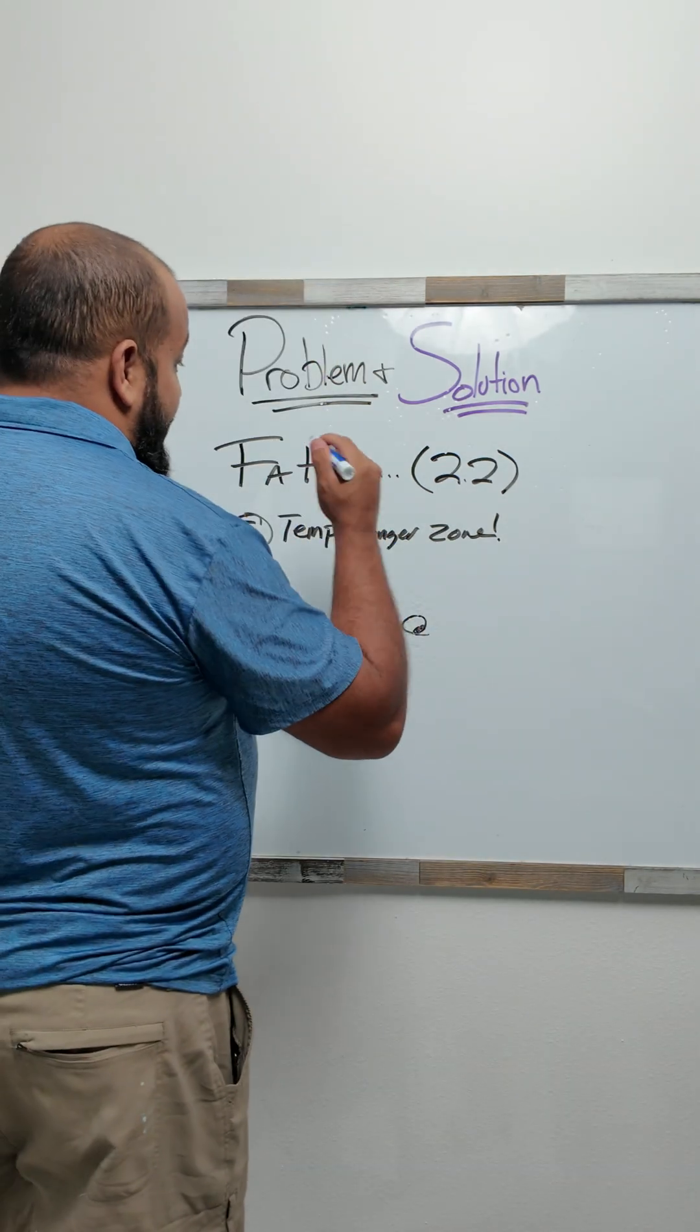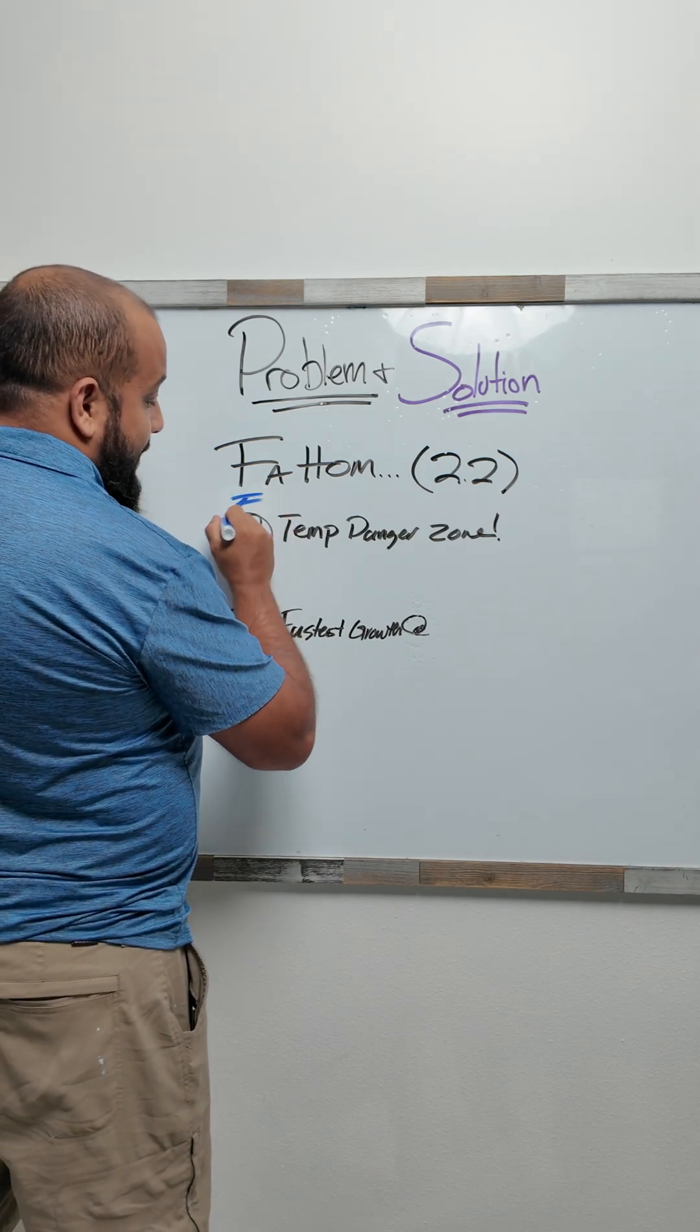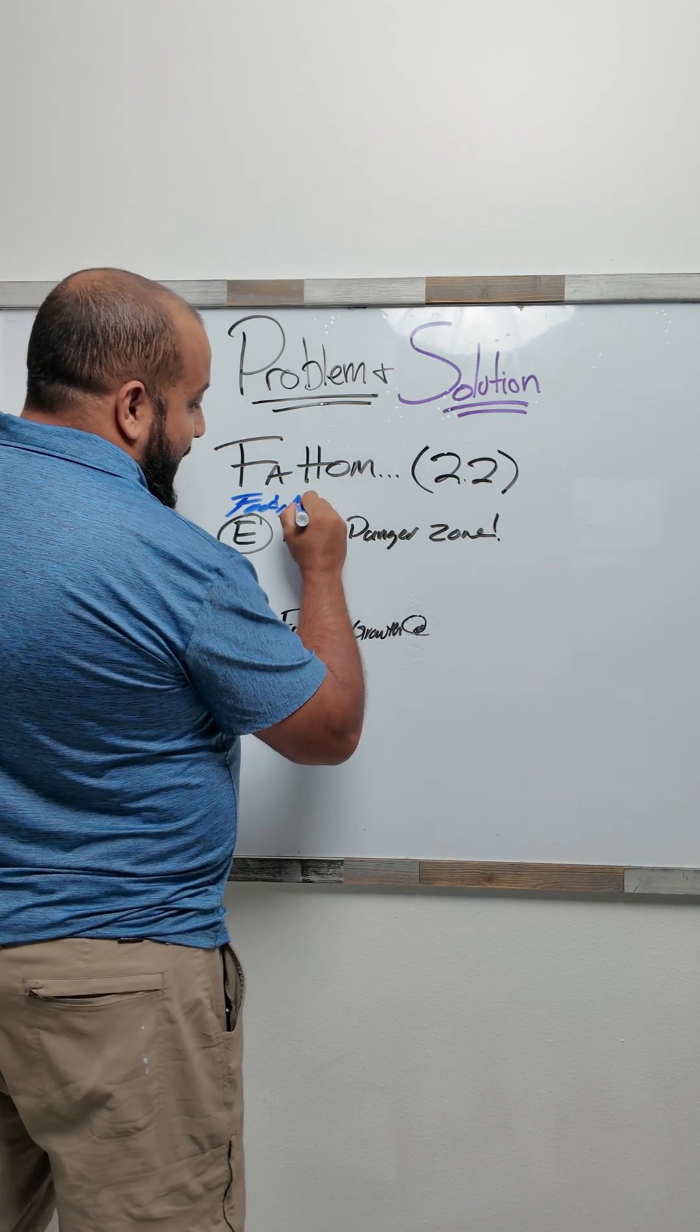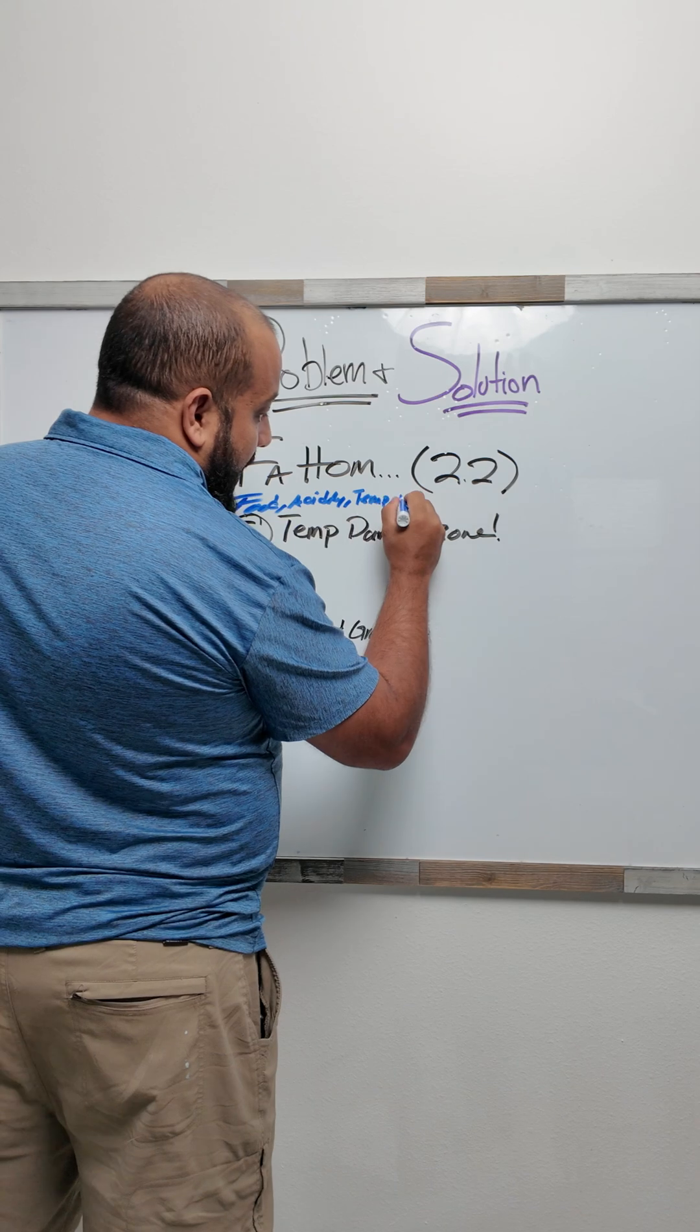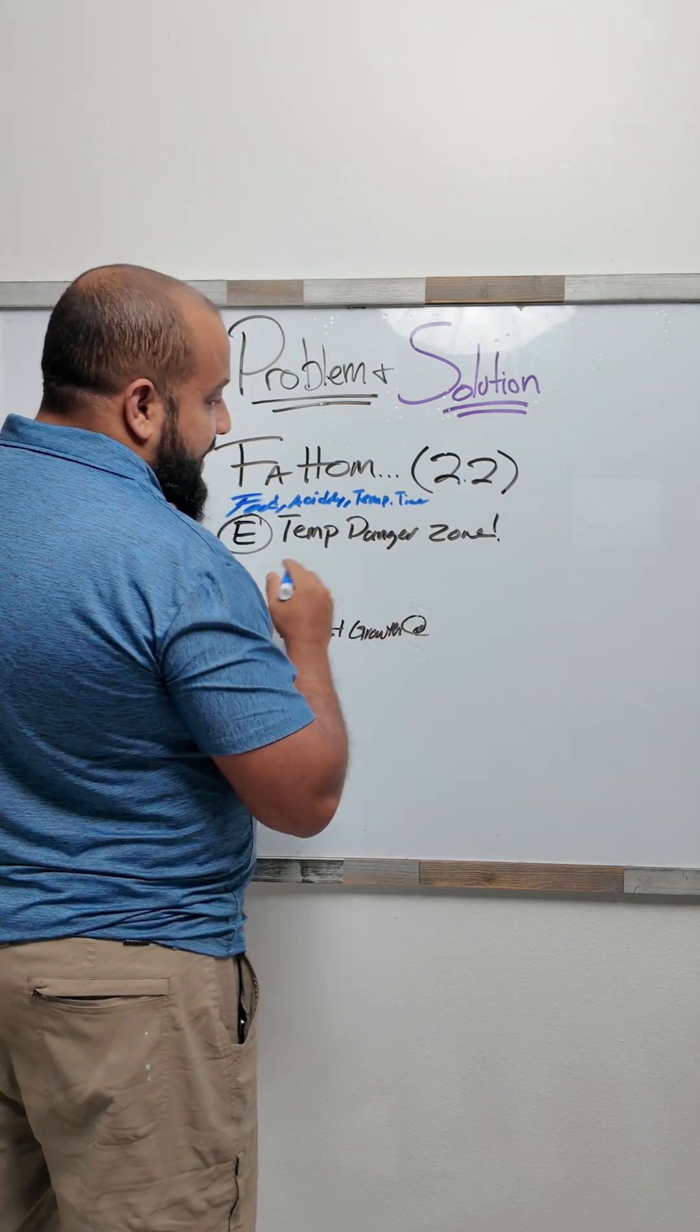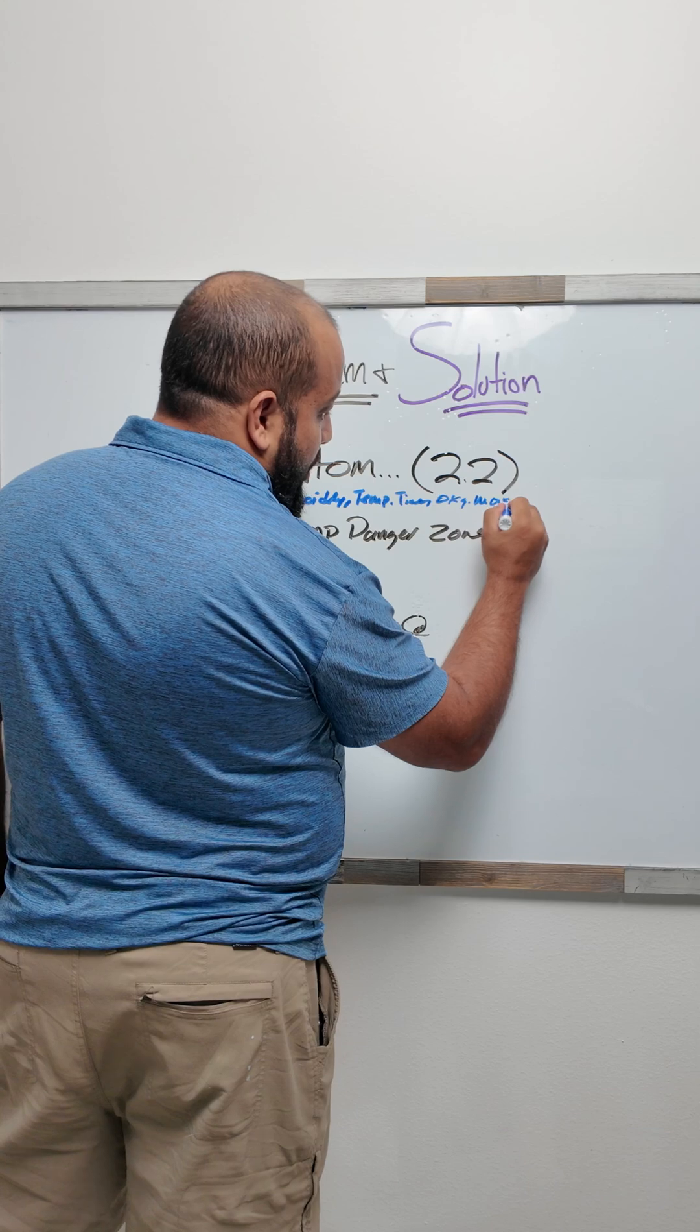For Fat Tom, we have the first letter. Can't have an issue without food. Then we have acidity, temperature, time, how long food sits out, oxygen, and moisture.